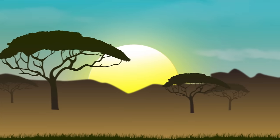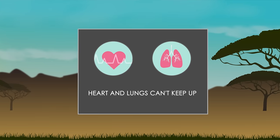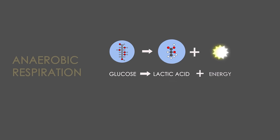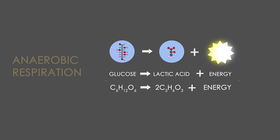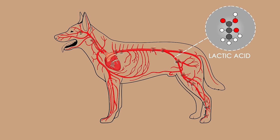Starting with animals: a cheetah sprinting to catch some prey cannot take in enough air and blood around the body fast enough for aerobic respiration. The heart and lungs can't keep up, so anaerobic respiration is carried out instead. Here is the generalised equation for anaerobic respiration. There is no oxygen involved. It is much less efficient than aerobic respiration and much less energy is released, because the glucose is only partially broken down.